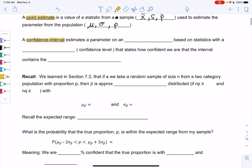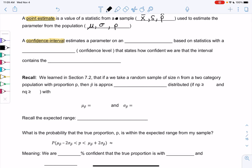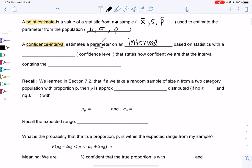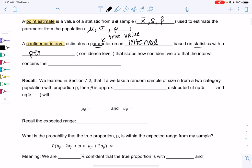A confidence interval estimates a parameter on an interval. So since we can't get the true value exactly, and we just know we're close, we can create an interval to estimate that. So we're going to estimate the true value on an interval based on statistics with a percentage that we call the confidence level. That states how confident we are that the interval contains the true value.